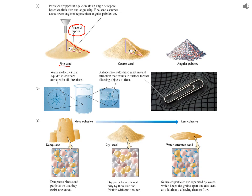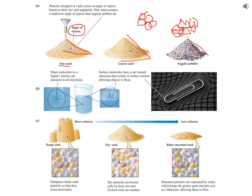If we have something like fine sand, it almost always holds an angle around 35 degrees. Coarse sand can hold a steeper angle like 40 degrees. If you have angular pebbles, you can have an even steeper angle — here we have 45 degrees. That's because if you have more angular particles, more of the surface area of those particles are in contact, so we have more friction holding them in place. If you have perfectly round or very smooth particles, there's less surface area in contact, so they can't hold as steep a slope because there's less friction.